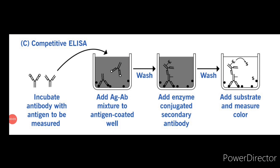Now let us understand competitive ELISA. Another variation for measuring amounts of antigen is competitive ELISA. In this technique, antibody is first incubated in solution with a sample containing antigen. The antigen-antibody mixture is then added to an antigen-coated microtiter well. The more antigen present in the sample, the less free antibody will be available to bind to the antigen-coated well. Addition of an enzyme-conjugated secondary antibody specific for the isotype of the primary antibody can be used to determine the amount of primary antibody bound to the well, as in an indirect ELISA. In the competitive assay, however, the higher the concentration of antigen in the original sample, the lower the absorbance.